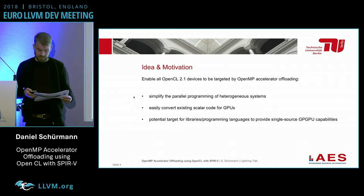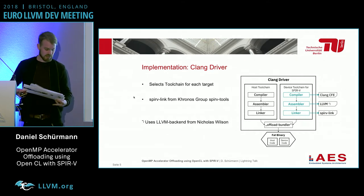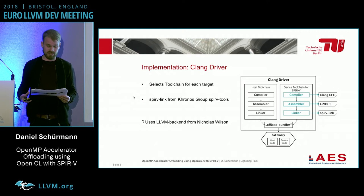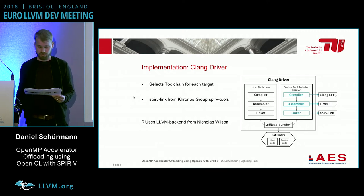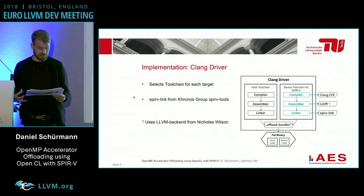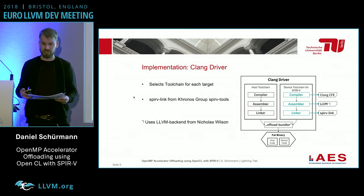Let's look at some implementation details. In Clang, the compilation of OpenMP programs is twofold: the Clang driver selects a toolchain for the host compilation and for each specified target. The main contribution of this work is a modified code generation in the Clang frontend.